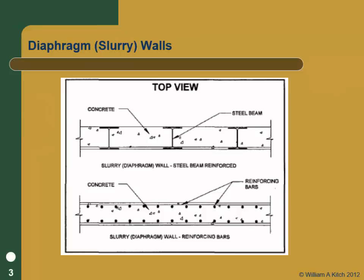Slurry walls are diaphragm walls — they're mostly called diaphragm walls now. If you look at older literature, they might be called slurry walls. Generally when people use the term slurry wall today, they're talking about a bentonite or clay hydraulic barrier used to prevent flow of contaminants. Be careful when you hear the term — they might mean diaphragm walls or something unrelated to excavation support.